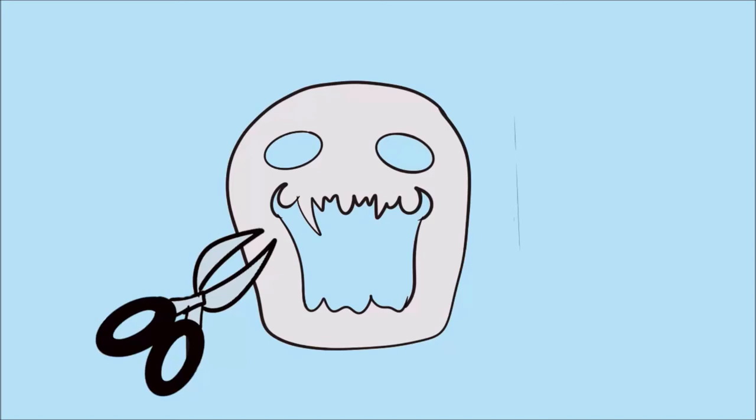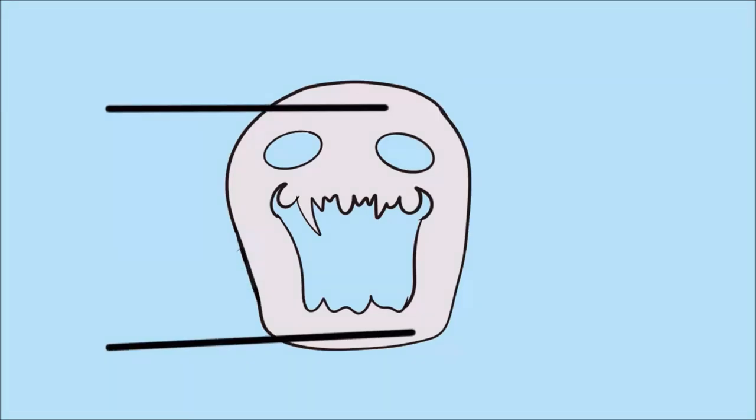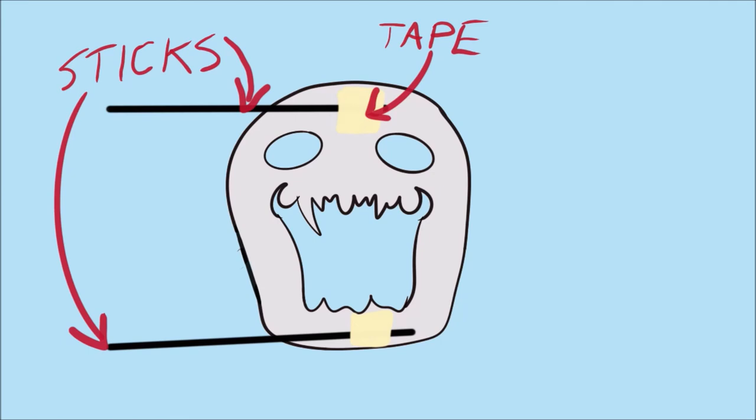After you have your face cut out, take two sticks. These sticks can be chopsticks or any two sticks that you find outside. Take these two sticks and tape one to the top of the face and one to the bottom of the face.